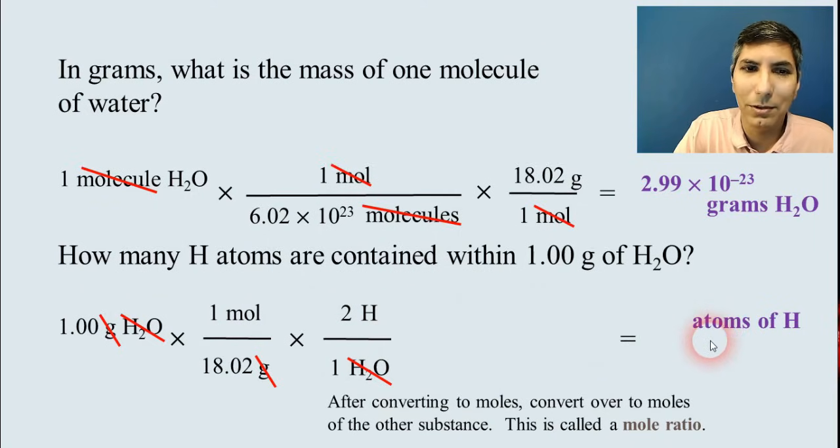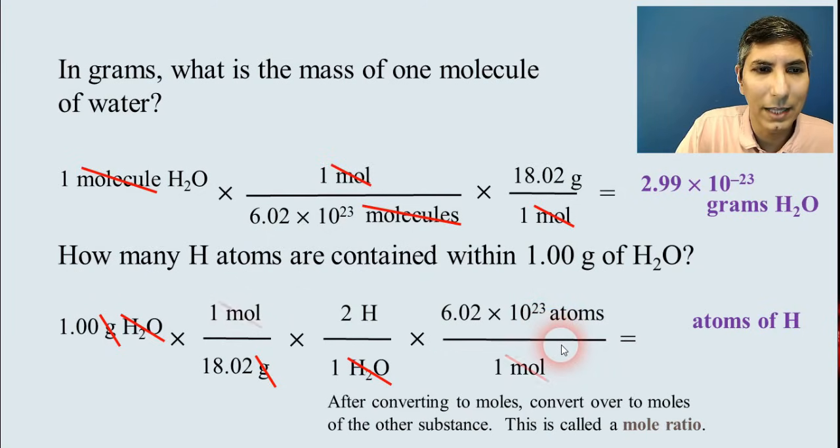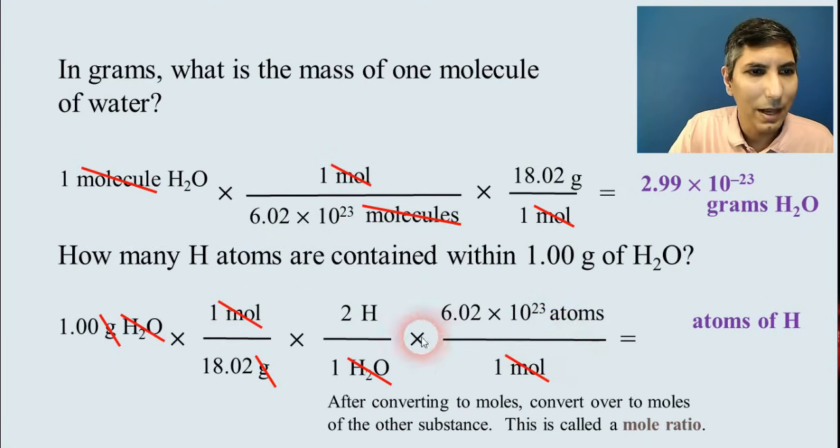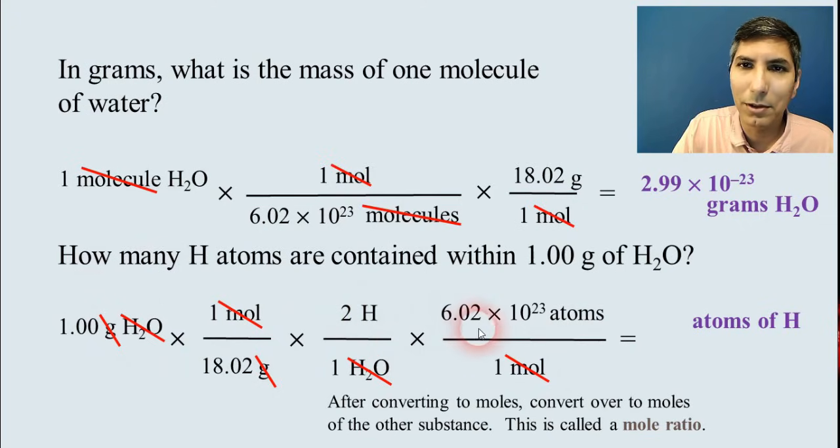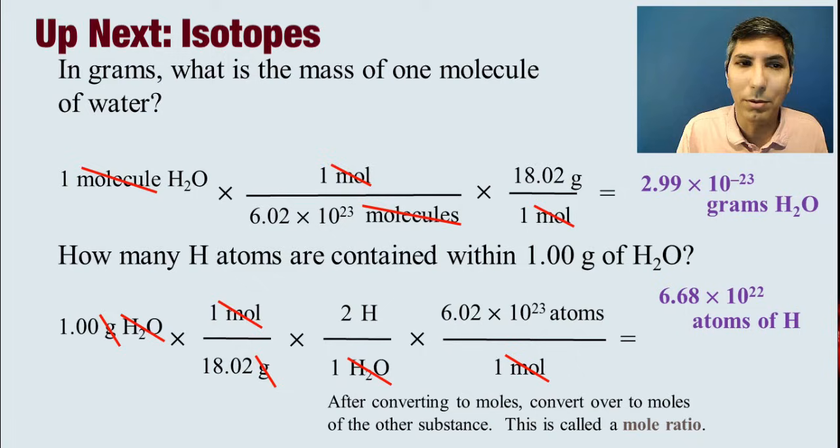I want to be in atoms of hydrogen. So now I can go from moles to atoms by putting one mole on the bottom and Avogadro's number of atoms on the top. When I cancel moles, now I can calculate this. I've got the 1.00 divide by 18.02 times two times 6.02 times 10 to the 23rd. So when you key this into your calculator, your answer should be somewhere pretty close to 6.68 times 10 to the 22nd atoms of water. Once again, a very large number. That makes sense because we're asking about how many atoms are in there.